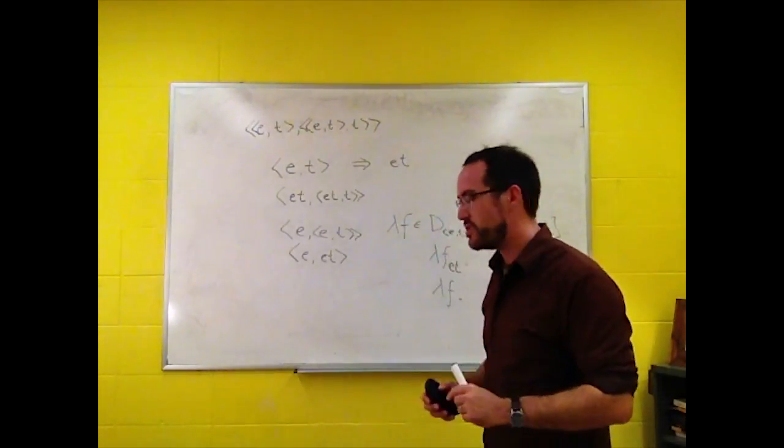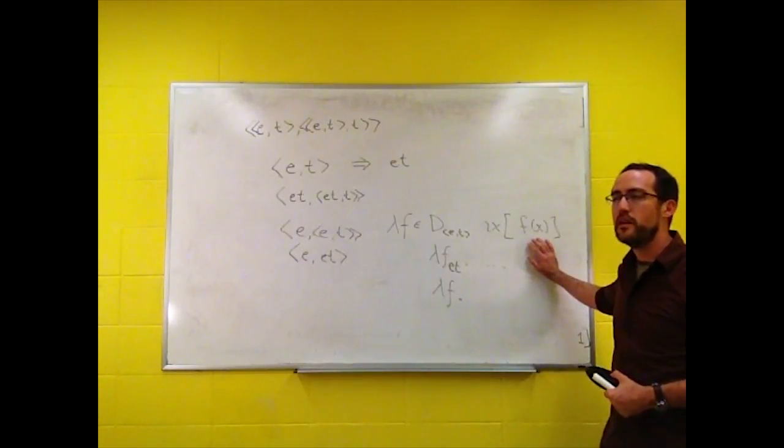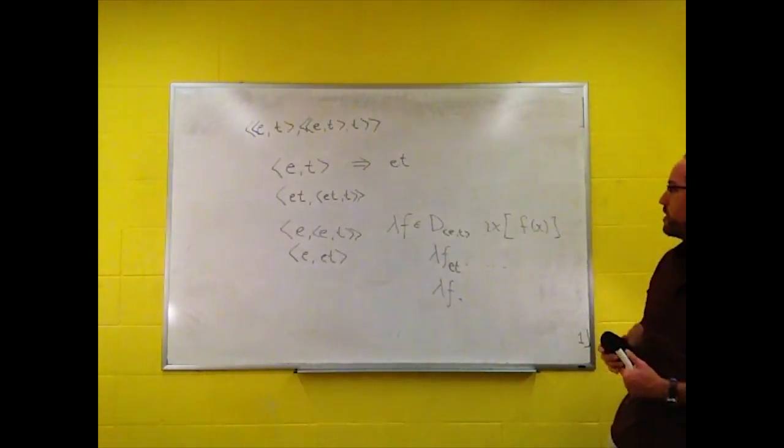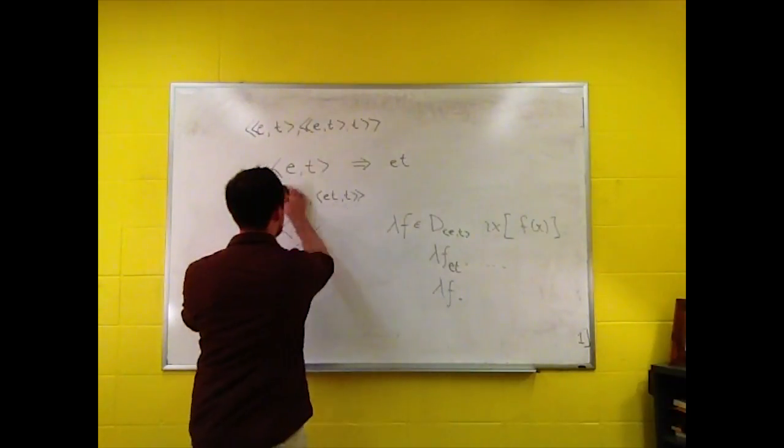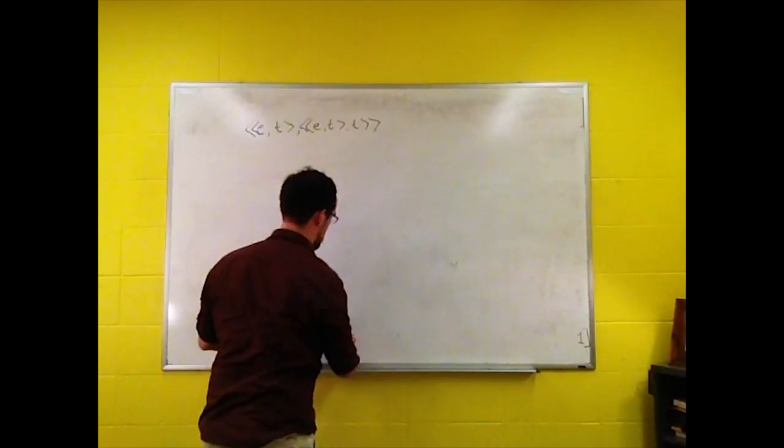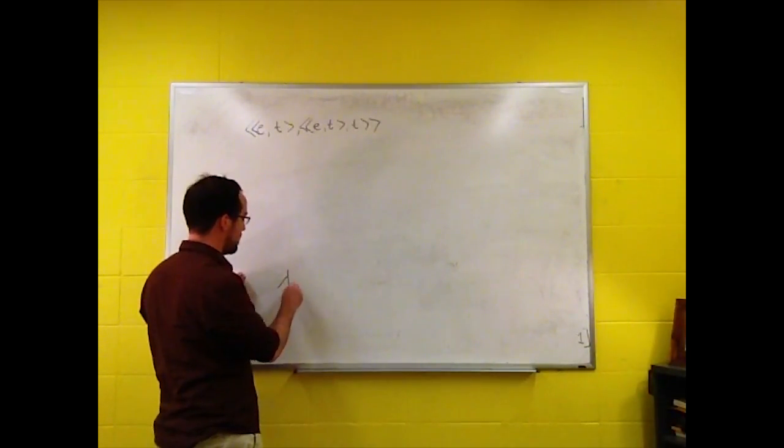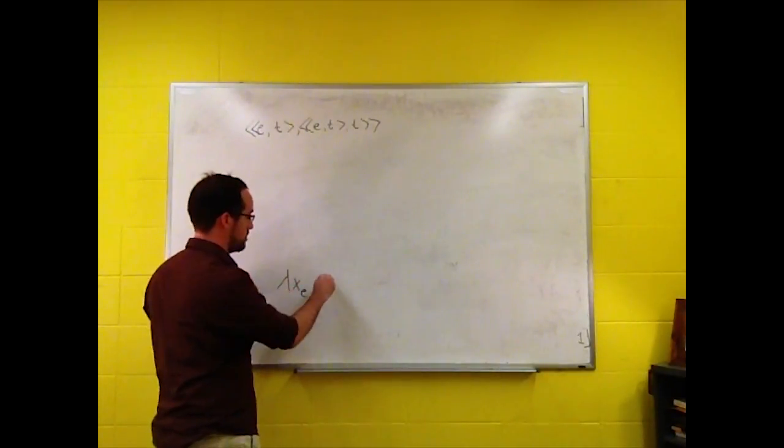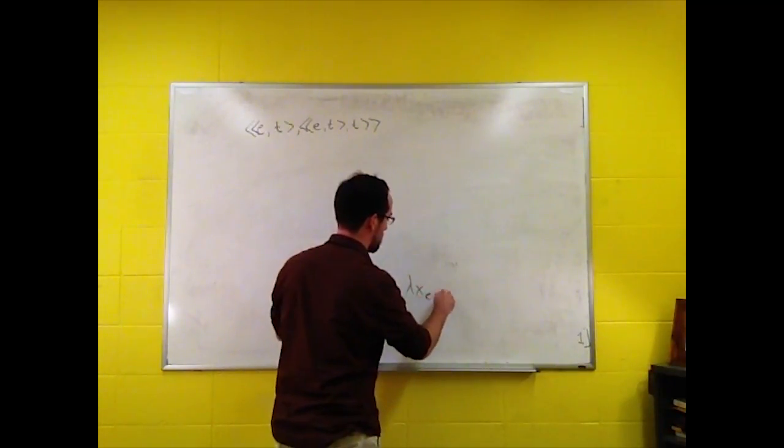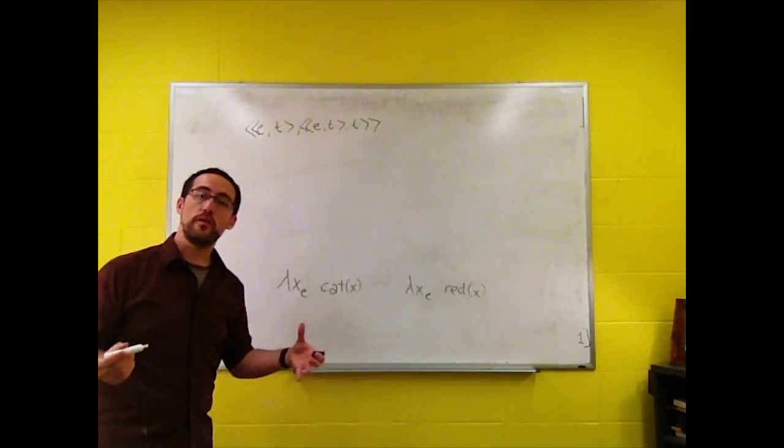So we've seen it a little bit, I've mentioned it here and there. We do it here, where, when we have an equals one, anytime you have an equals one, essentially, people will write it out. So, to take a simple case, like predicate modification, we have lambda X cat of X, and we have lambda X red of X. And we want to combine those to make a red cat.